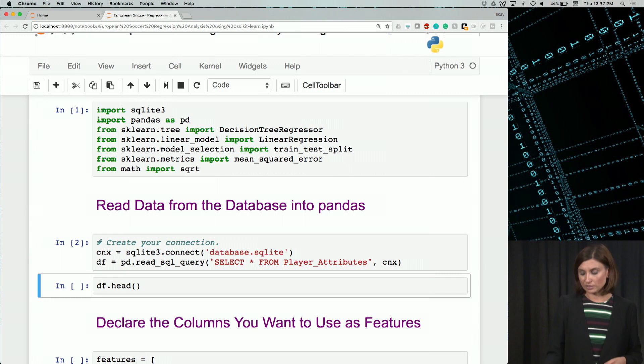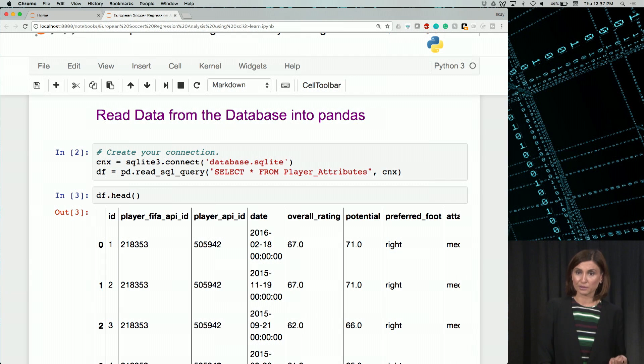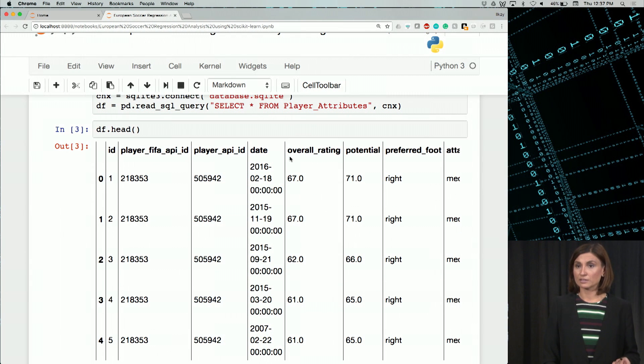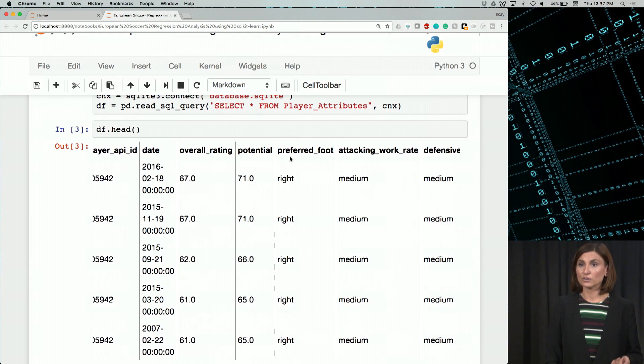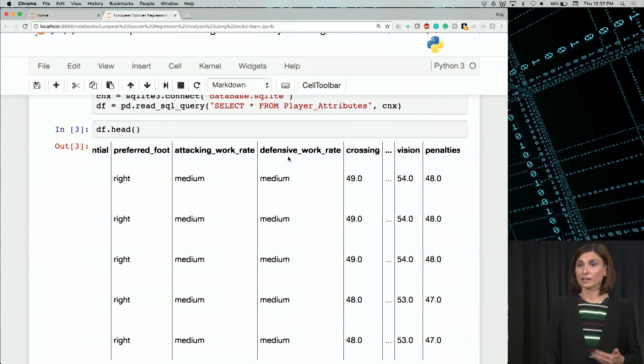So let's look at the first five rows of this data frame to familiarize ourselves with the data. We see that there are some features related to players, overall rating, potential, preferred foot, attacking work rate, defensive work rate, and things like that.